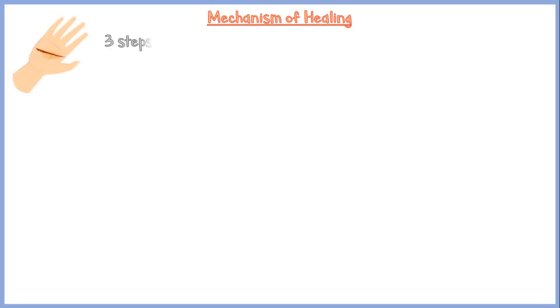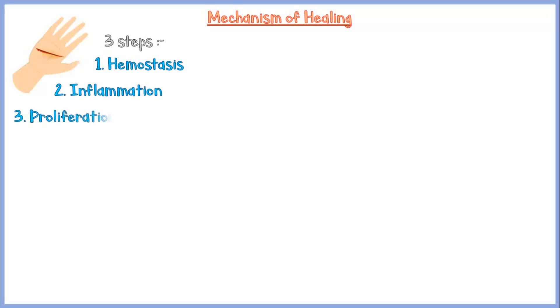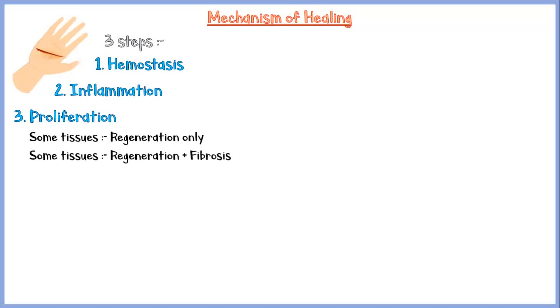Now let's discuss the mechanism of wound healing, taking a cut injury to the skin as an example. There are three steps in the process of healing: hemostasis, inflammation, and the proliferative phase. During the proliferative phase, some tissues will undergo regeneration only, some will undergo both regeneration and fibrosis, and some will undergo fibrosis only.